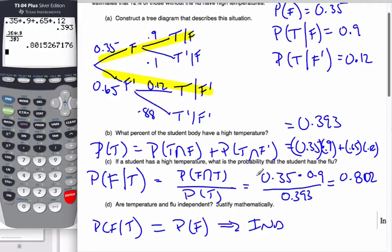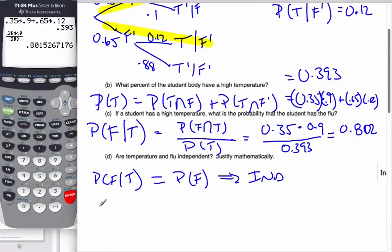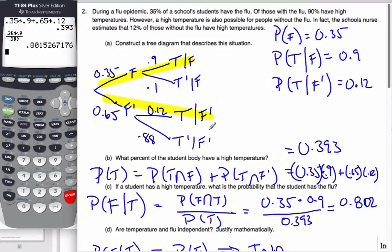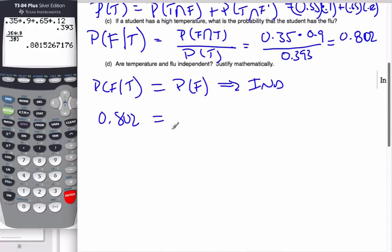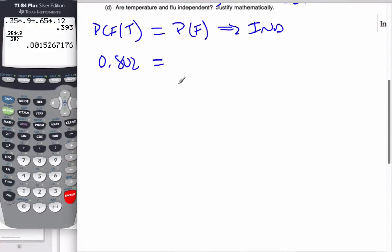Well, from my calculations, it is 0.802. Does it equal the probability of flu? It's 0.35. That is clearly not equal. Therefore, it is not independent.